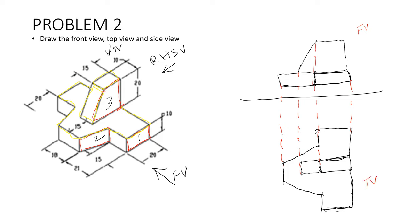Finally, we are going to make the right-hand side view. For the right-hand side view, simply make the extension of projection lines here. Make all the projection lines. Afterwards, we have to draw the right-hand side view component. When we view from the right-hand side, we are seeing this rectangle. A 10 by 20 rectangle is visible, and you are drawing the 10 by 20 rectangle here. This 10 by 20 rectangle has been drawn. Then we have the overall length — a larger rectangle — and you are drawing the larger rectangle.